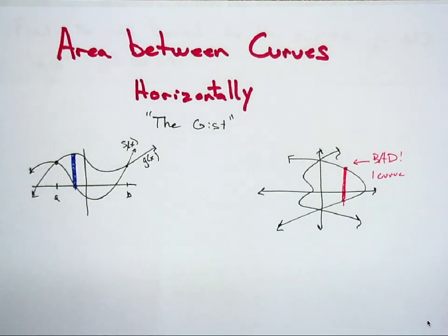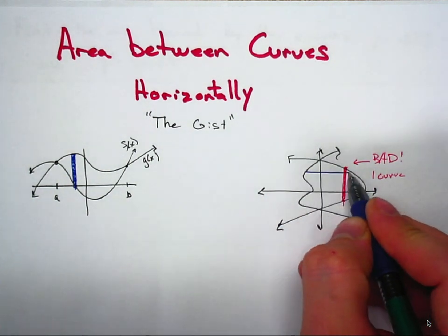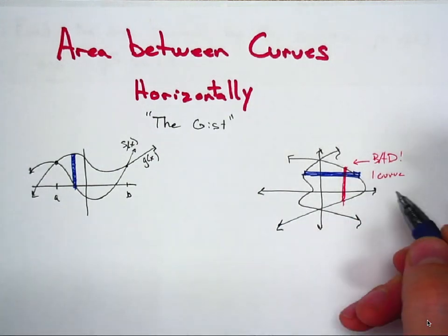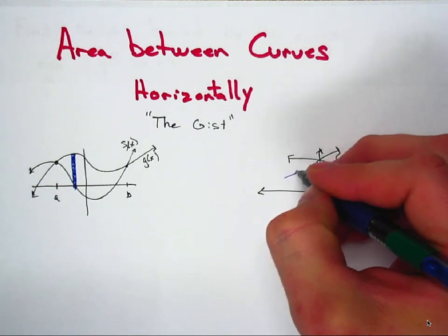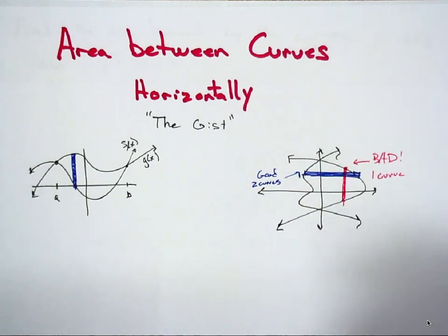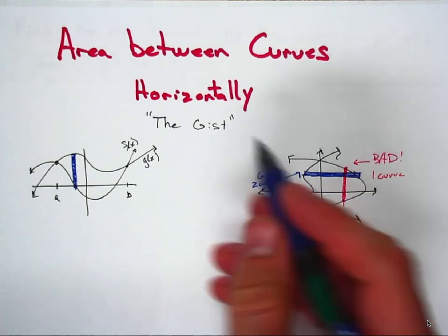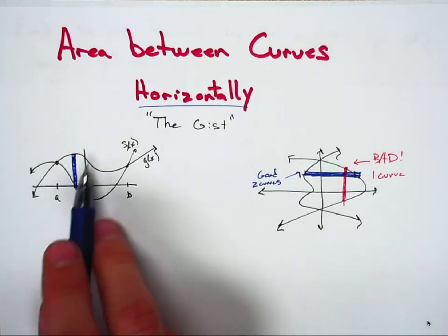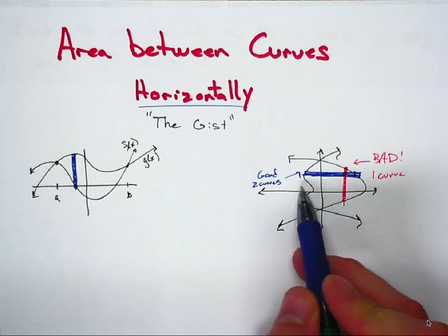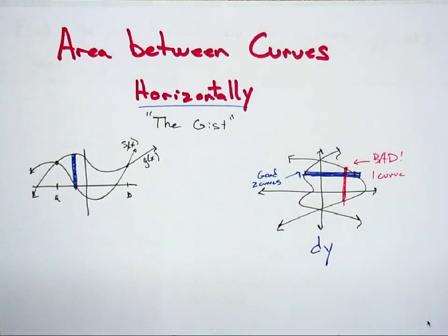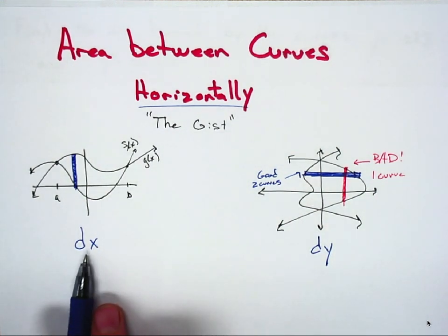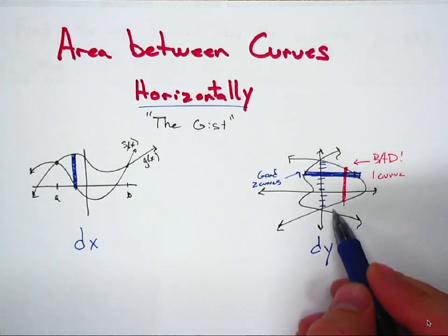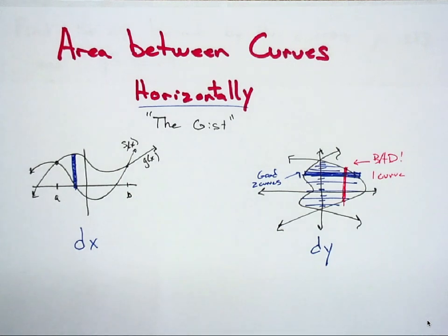If I were to draw in a horizontal cross-section instead, this would be an example of what that sample rectangle would look like. As you draw that in and shade it, now you can see that you have two curves — this is good, as there are two curves being used, so we have two different x values. That's the big deal here. This rectangle is horizontal, so instead of chopping it up vertically with vertical cross-sections, we're going to chop this up horizontally. This turns into a dy problem, where the previous approach was a dx problem — chopping with respect to x versus chopping with respect to y.